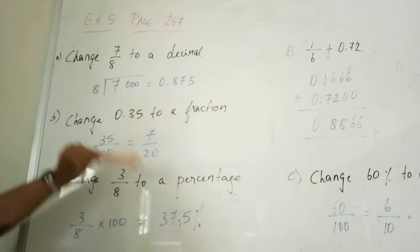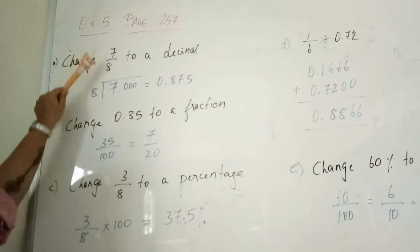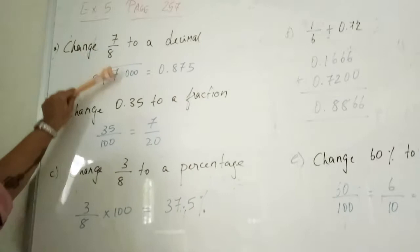First one, to change a fraction to a decimal. So 7 over 8, which is a fraction, how do we change to a decimal? All that you do is just do 7 divided by 8 and then you get the answer at decimal point.